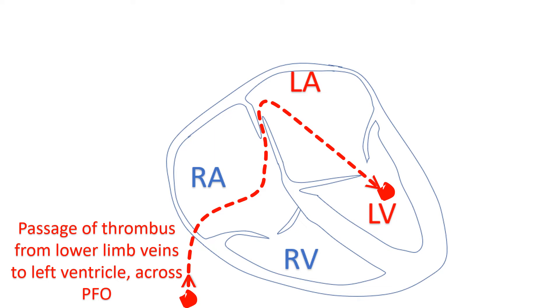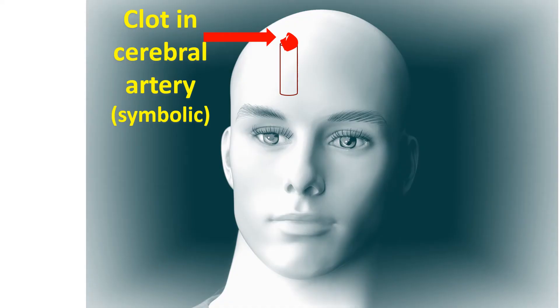This is known as paradoxical systemic embolism originating from the venous side. If the embolus gets lodged in a cerebral artery and blocks it, a stroke may occur.